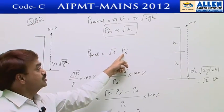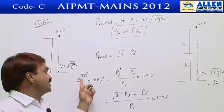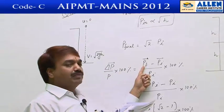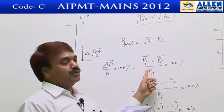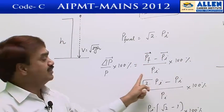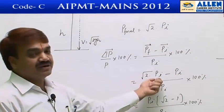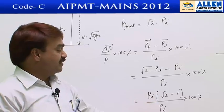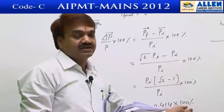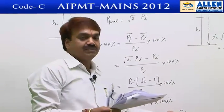We calculate the percentage change in momentum: (final momentum − initial momentum) divided by initial momentum, multiplied by 100 percent. Final momentum is √2 times initial momentum, so the expression becomes (√2 − 1) × 100 percent equals 0.414 × 100 percent equals approximately 41 percent. The correct option is the fourth one.